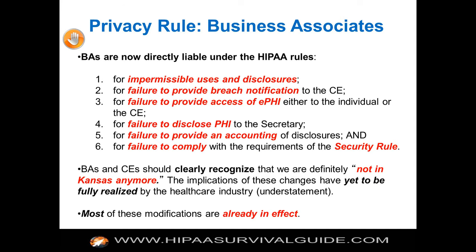Subcontractors of BAs are also now BAs, so you have this chain of BAs. What are business associates directly on the hook for? Almost everything with respect to the three rules: impermissible uses and disclosures, failure to provide breach notification to a covered entity, failure to provide access to ePHI if requested by a patient, failure to disclose PHI to the secretary, failure to provide an accounting of disclosures, and failure to comply with the requirements of the security rule.